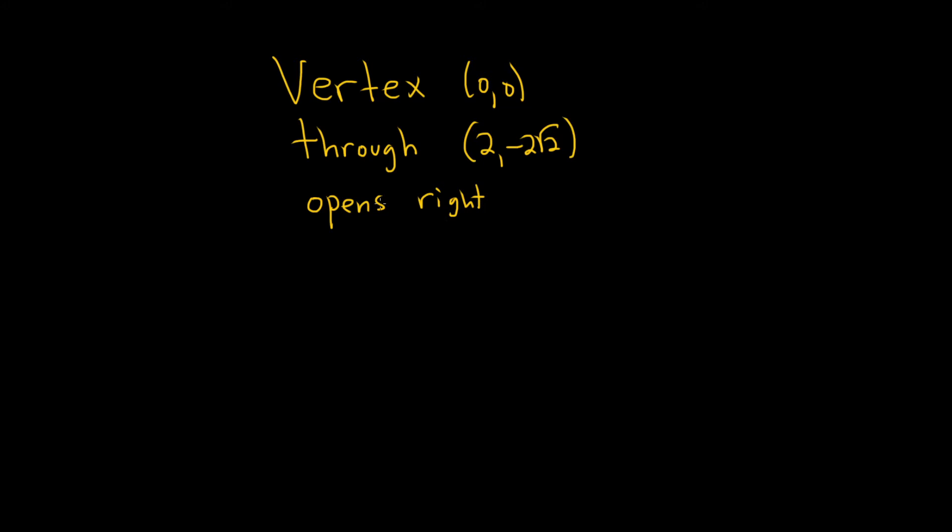The first thing we're going to use is the fact that it opens right. That will give us the formula. Whenever you have a parabola that opens left or right, the y is always being squared. So the formula is (y - k)² = 4c(x - h).